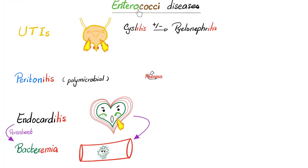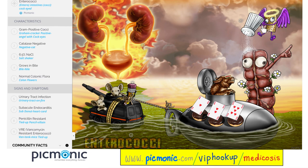Diseases caused by Enterococci include urinary tract infections, peritonitis, and endocarditis that can lead to persistent bacteremia. Enterococci are gram-positive, they can grow in salt and in bile, they are part of the normal flora of your colon, and diseases include urinary tract infections and subacute endocarditis. Many of them are resistant to penicillin and vancomycin.